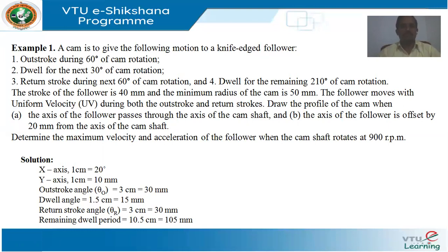According to the given problem, we have to identify what type of follower it contains — the given problem contains a knife-edged follower. The outstroke angle is 60 degrees, first dwell period is 30 degrees, return stroke angle is 60 degrees, and the second dwell period is 210 degrees. Stroke of the follower is 40 millimeters, and the minimum radius of the cam — that is the base circle radius — is 50 millimeters. The follower moves with uniform velocity during both outstroke and return strokes.